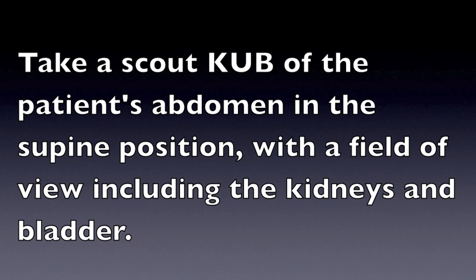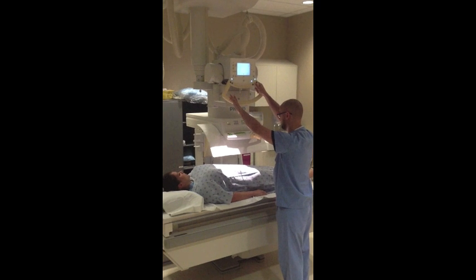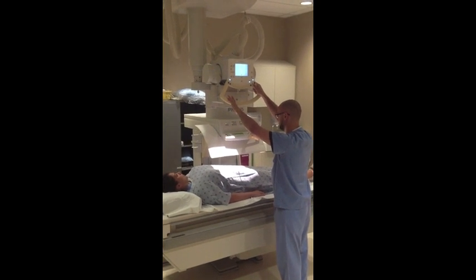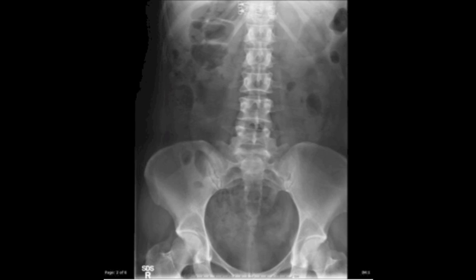Take a scout KUB of the patient's abdomen in the supine position, with a field of view including the kidneys and bladder. This is an example of a KUB image.